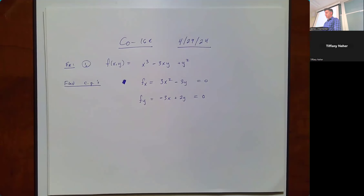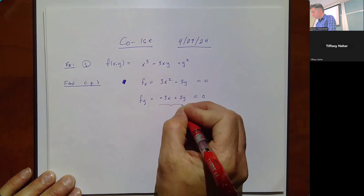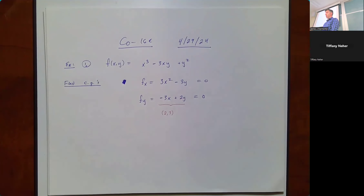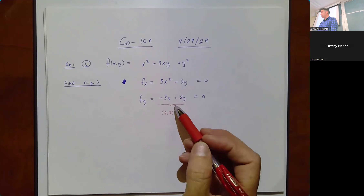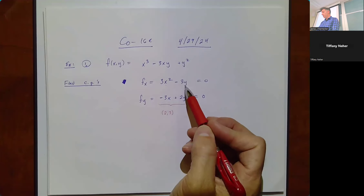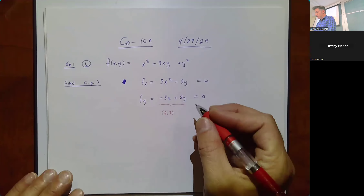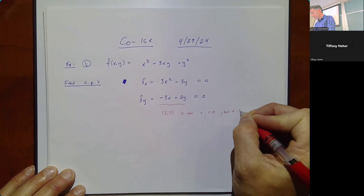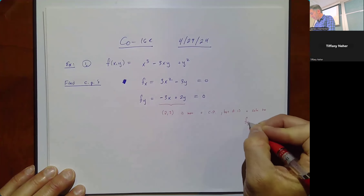Now we have to make choices. Unlike the last example, none of these have just numerical solutions right off the bat — there's no x = 2 or y = 5. For example, one solution to the second equation being zero would be x = 2 and y = 3, but that's not a critical point because it's not also a solution to the first equation. Plugging in x = 2 and y = 3 gives 3(4) - 9, which is not zero. So (2, 3) is not a critical point, but it is a solution to fy = 0.